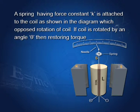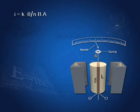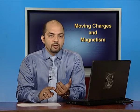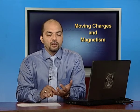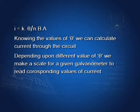As the field is radial, alpha equals 90 degrees, so the maximum torque τ equals NBIA. Due to this torque, the coil rotates. This spring opposes the rotation; if at any instant the coil is rotated by angle theta, then the restoring torque equals K times theta. At equilibrium, NBIA equals K times theta. From this, I equals K·theta divided by NBIA. Knowing the values of theta, K, N, B, and A — all constants for a given galvanometer — we can calculate the current and make a scale for corresponding values.